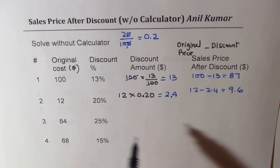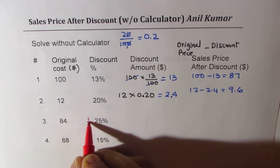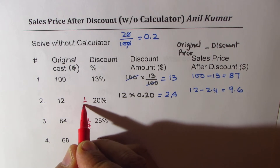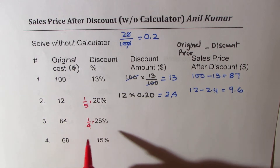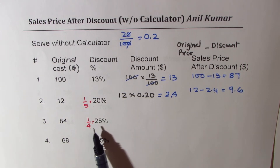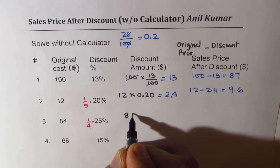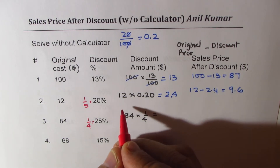For 25% of $84, I'm treating 25% as a quarter — one out of four. This is very important: 25% equals one-fourth. Similarly, 20% can be treated as one out of five. Converting percentages to fractions is sometimes very helpful. So we are doing 84 times one-fourth. When convenient, use fractions — 25% as a quarter of it.